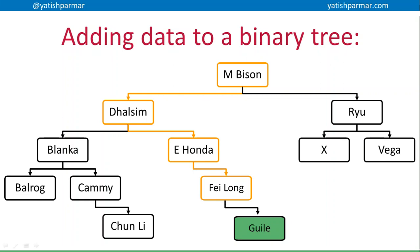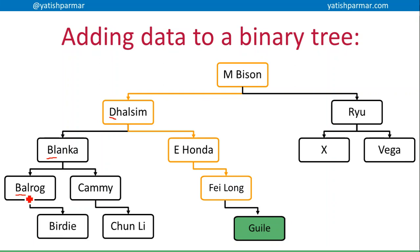Similarly, if I wanted to insert Birdie: B is smaller than M so I go left, B is smaller than D so I go left again, B-I is smaller than B-L so I go left, but B-I is larger than B-A, so I now need to insert a new right pointer and that's going to be storing my new node.